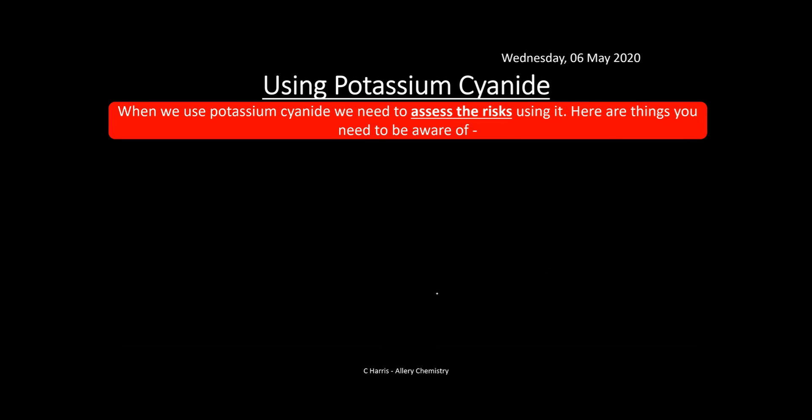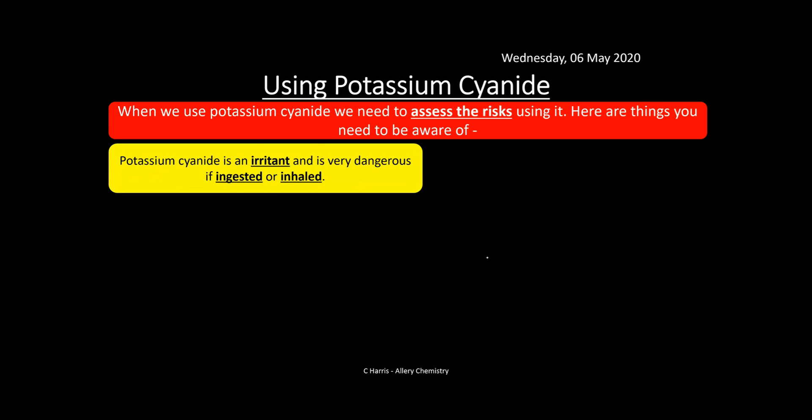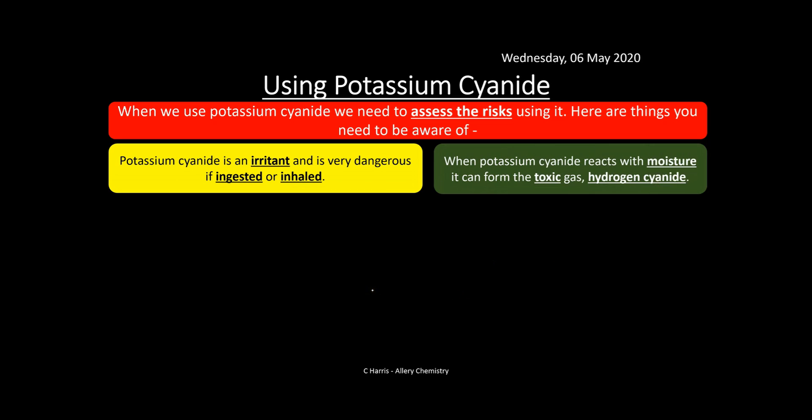When using potassium cyanide, you need to assess the risks. Potassium cyanide is an irritant — it's very dangerous if ingested or inhaled, but it's safer than hydrogen cyanide, which is a gas that is much more difficult to control. That's why we prefer potassium cyanide. When it reacts with moisture it can form hydrogen cyanide gas, so we must keep it dry.